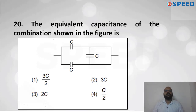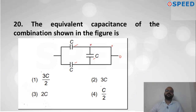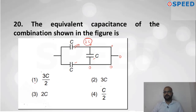Question twenty: Equivalent capacitance of a combination — three capacitors are given. One capacitor's terminals are connected by plain wire with no potential drop, so that middle capacitor is effectively shorted/useless. Only two capacitors are connected in parallel. Equivalent capacitance = 2C. Option number 3 is correct.